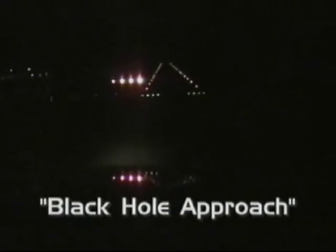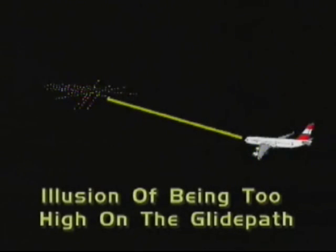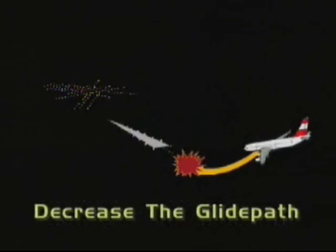Night flying has illusions also. A final approach during a dark night with no stars or moonlight, with no lights before the runway, and city lights or rising terrain beyond the runway is known as a black hole approach. An approach under these conditions may produce a visual illusion of being too high on the glide path. If you believe this illusion, you may respond by pushing the aircraft nose down to decrease the glide path, which could cause you to land short of the runway.